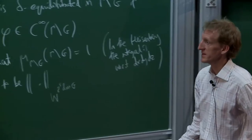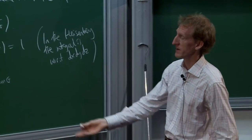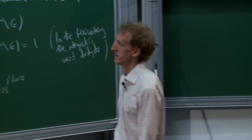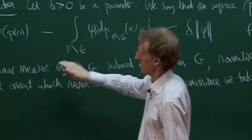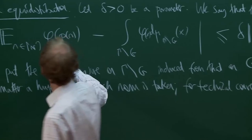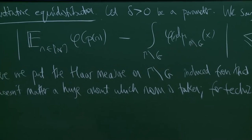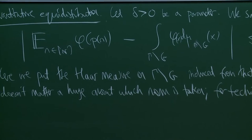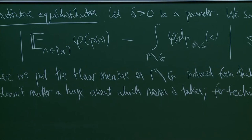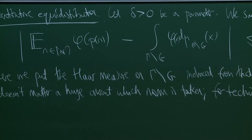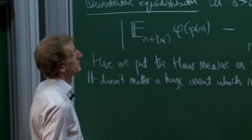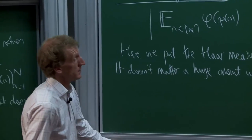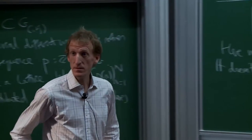The basic idea here is simply that you're comparing space averages and time averages, and that's how you decide whether a sequence is close to equidistributed.